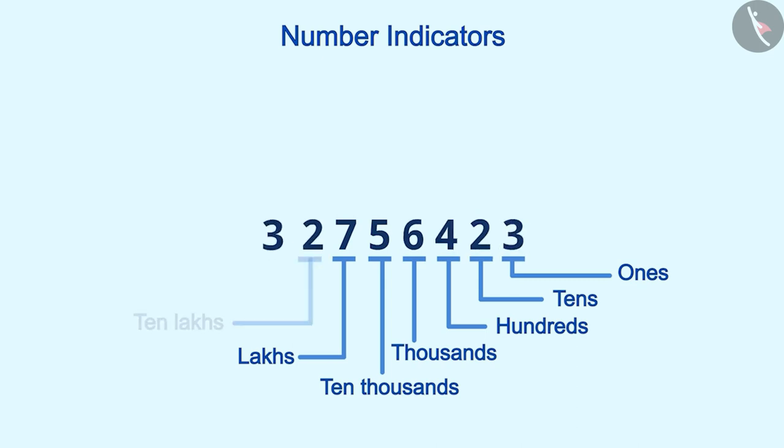For these new digits, we now need two or more indicators, which are 10 lakhs and crores.